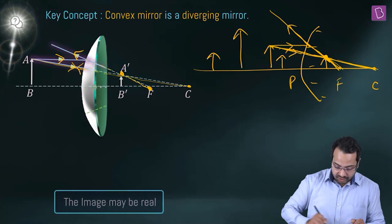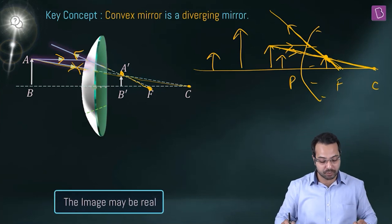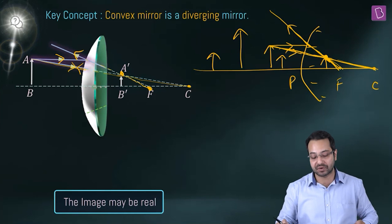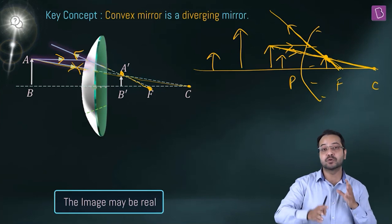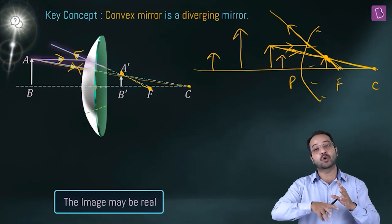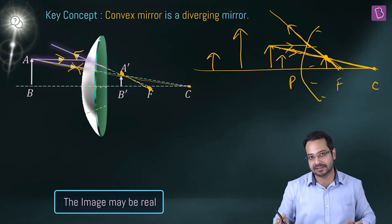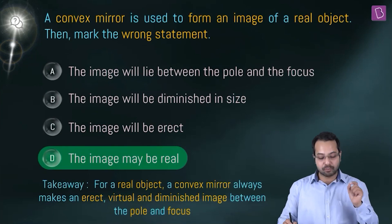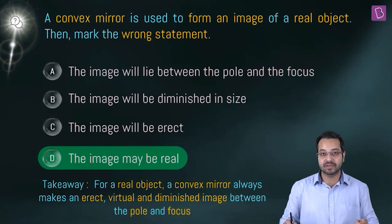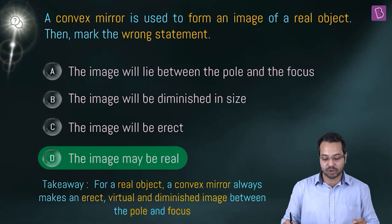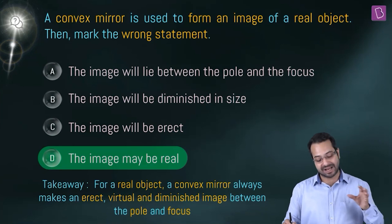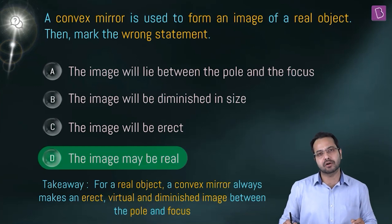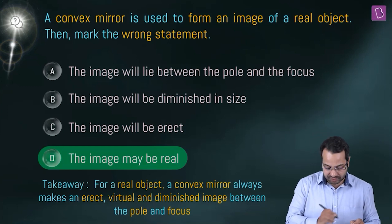The wrong statement is option D — 'the image may be real' — because a convex mirror is diverging and the rays can never actually cross to form a real image. The correct option is D. The takeaway: for a real object, a convex mirror always produces an erect, virtual, and diminished image between the pole and focus.